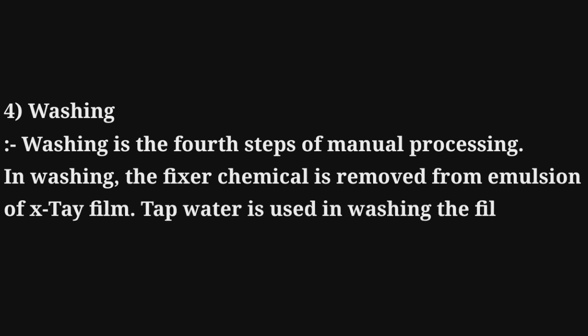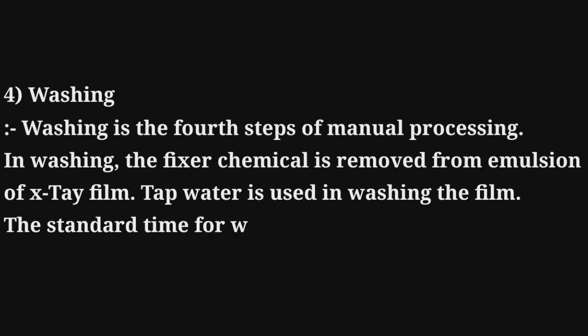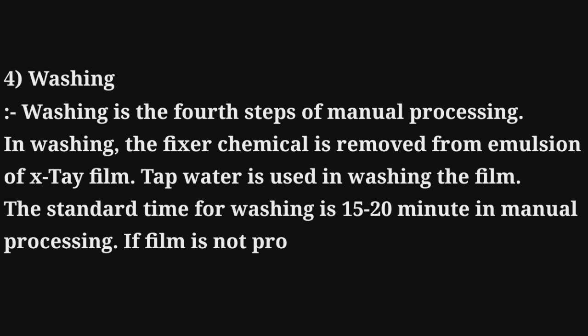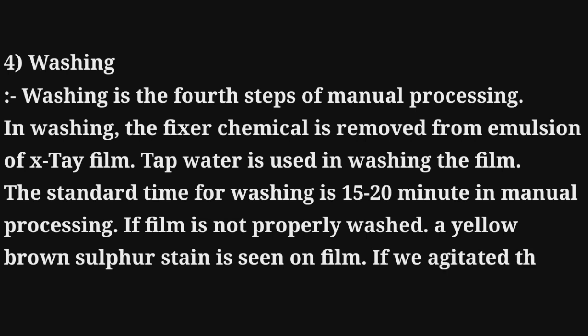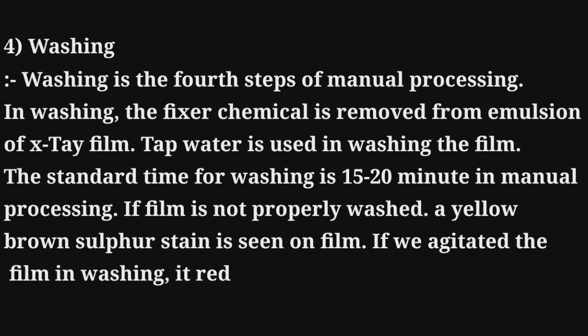Washing is the fourth step of manual processing. In washing, the fixer chemicals are removed from the emulsions of the X-ray film. Running water is used for washing the film. The standard time for washing is 15 to 20 minutes in manual processing. If the film is not properly washed, a yellow-brown sulfur stain is seen on the film. Agitating the film during washing reduces the time needed.